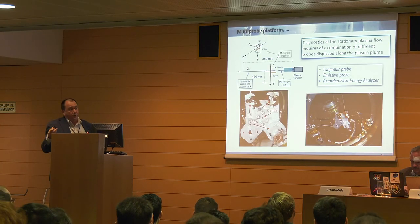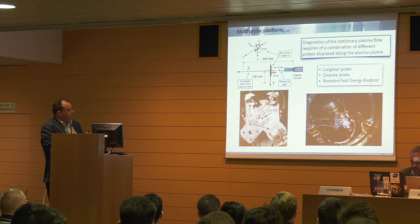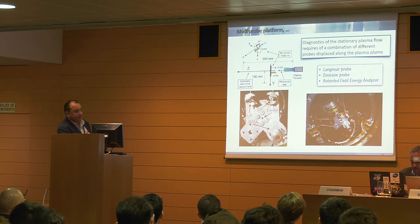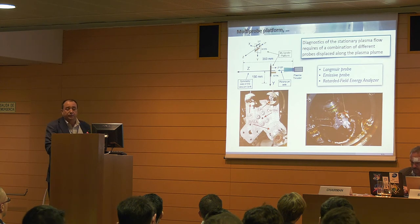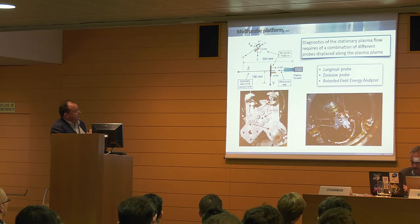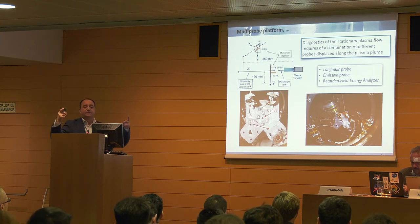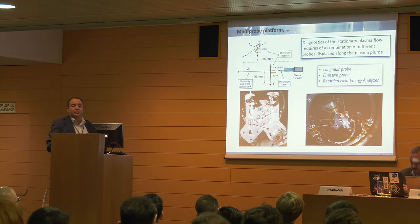To explore the properties of the plasma plume, one advantage of electric probes is that they allow point-wise measurement at a given point in space. To get a characterization of the entire flow in a stationary condition, we need to move the probe along the plasma plume. We developed a computer-controlled stand with three different diagnostics: the Langmuir probe, the emissive probe, and the retarding field energy analyzer. We can displace this stand in front of the plasma thruster along 35–150 millimeters axially and also move in the perpendicular Y and X directions about 150 millimeters.